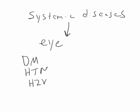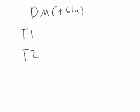In this lecture, we're going to be talking about how systemic diseases affect the eye. Let's begin by discussing diabetes.